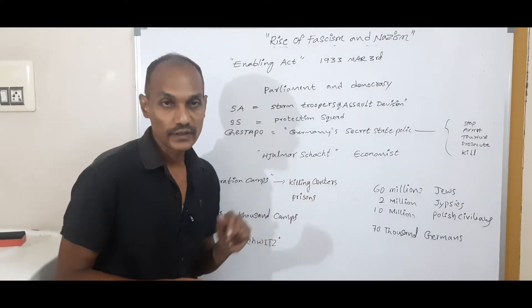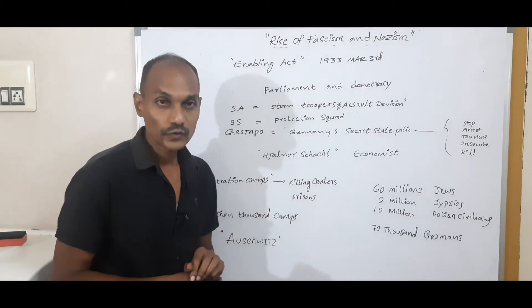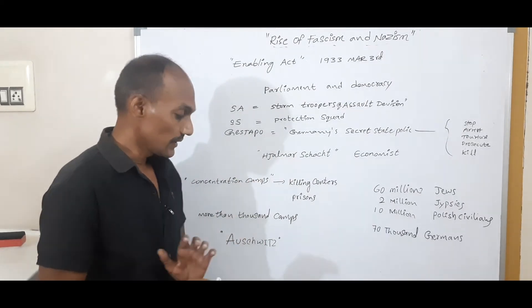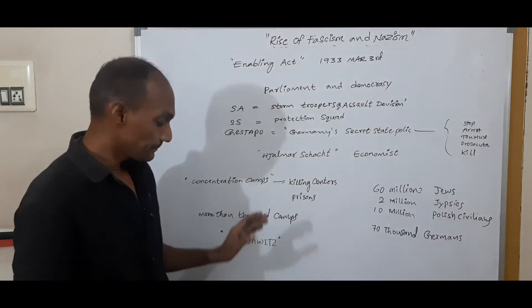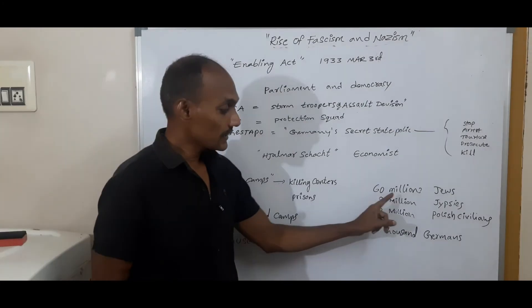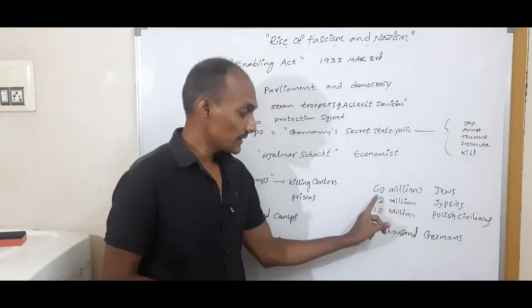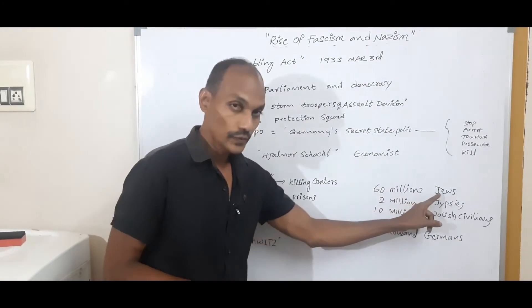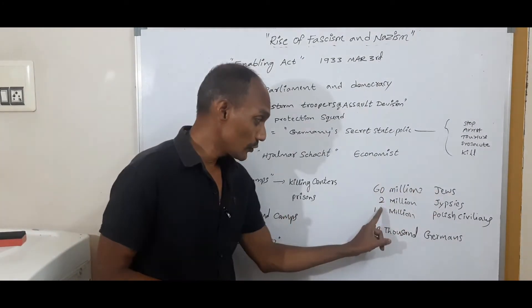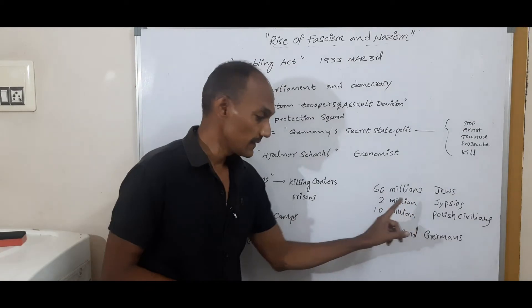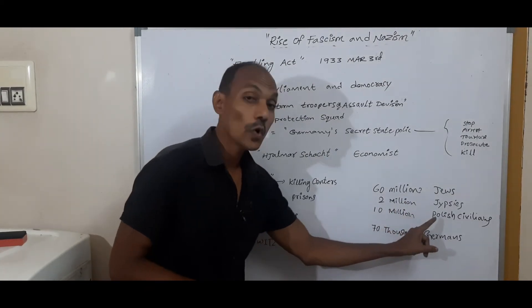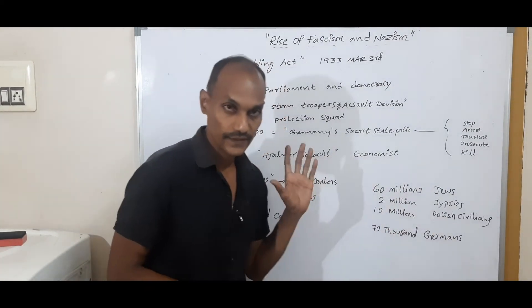Looking at some figures: 60 million Jews, 2 million gypsies, and 10 million Polish civilians were killed by the Nazi government.